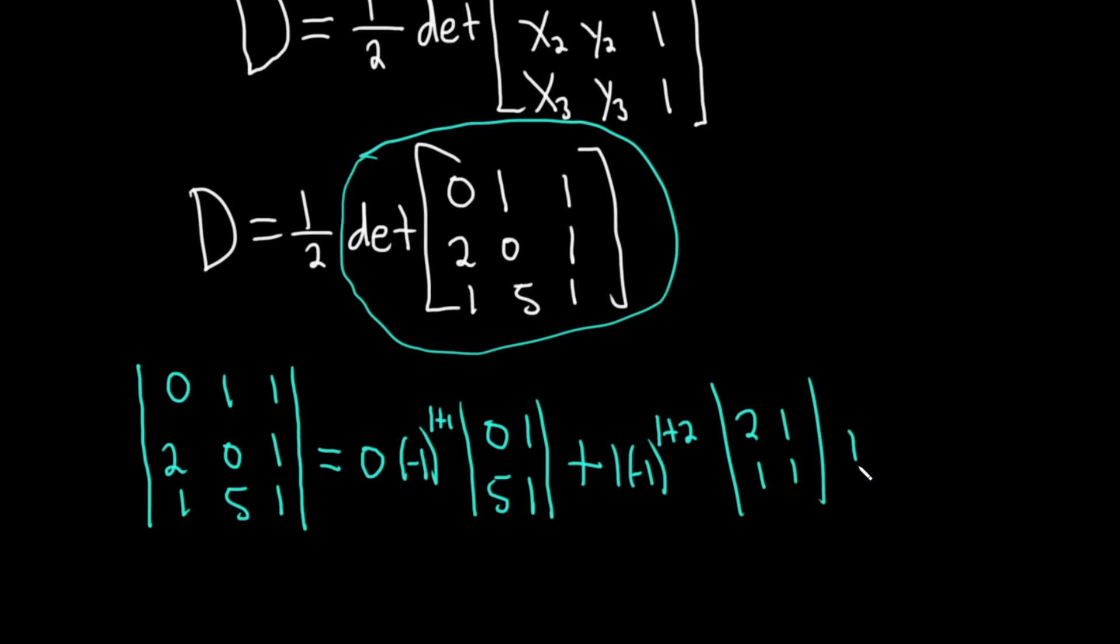And then lastly, plus, then it's 1, negative 1 to the—and then it's row plus column. So first row, third column, 1 plus 3. And crossing out that last row and last column, we have 2,0,1,5.